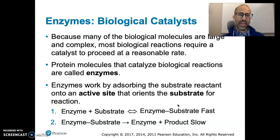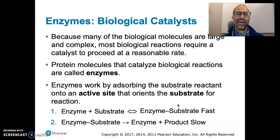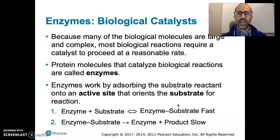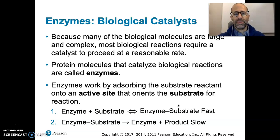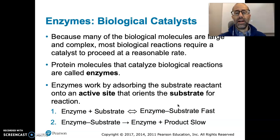We also have enzymes. Enzymes are biological catalysts. Because many biological molecules are large and complex, most biological reactions require a catalyst to proceed at a reasonable rate. One of the things that determines rates of reaction is the collision factor and the orientation factor. Big molecules are going to have a really small orientation factor, so they're going to be slow if left to themselves. You need a biological catalyst to help orient molecules. Protein molecules that catalyze biological reactions are called enzymes.